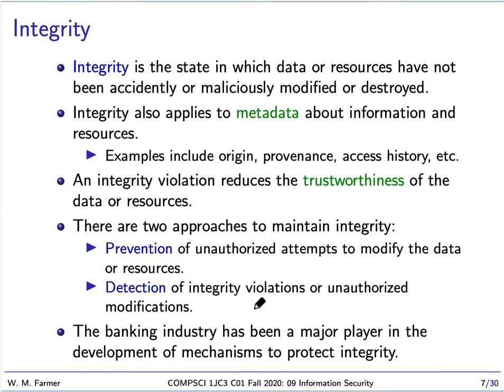Integrity is something a little different. Integrity is a state in which data and resources have not been accidentally or maliciously modified or destroyed. While confidentiality is concerned with keeping information secret, integrity is concerned with keeping data and resources intact and unmodified. Integrity also applies to metadata, including the origin of data, provenance (the history of where data came from), and access history — who has had access to the data. If someone gains access to data and modifies it, this reduces the trustworthiness of the data and resources.